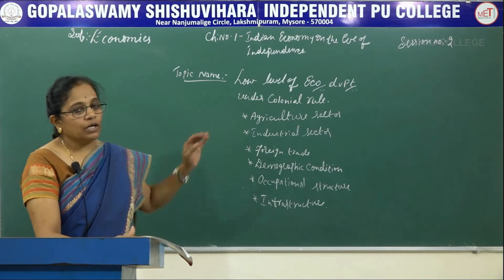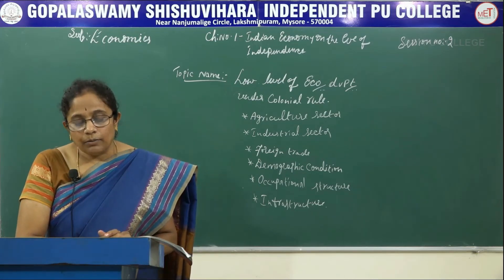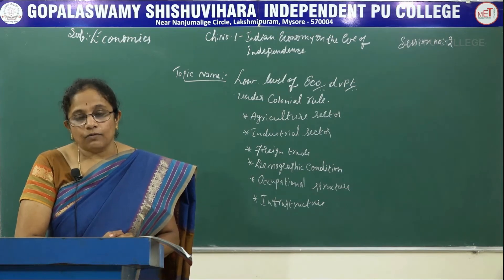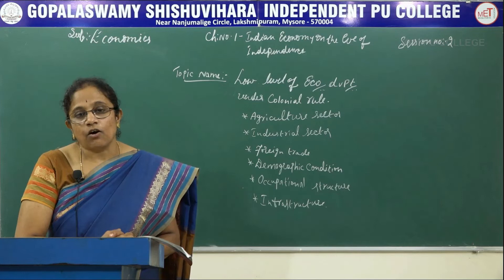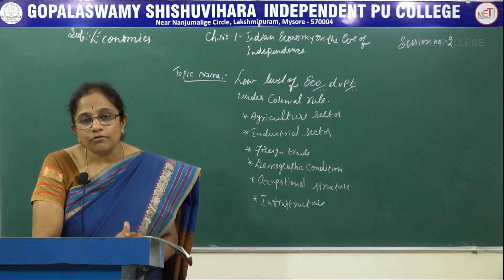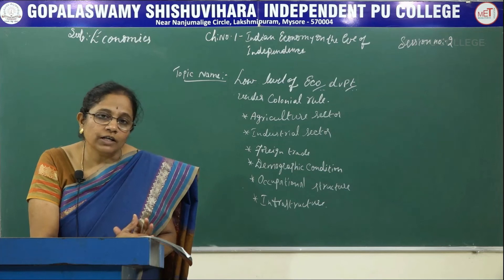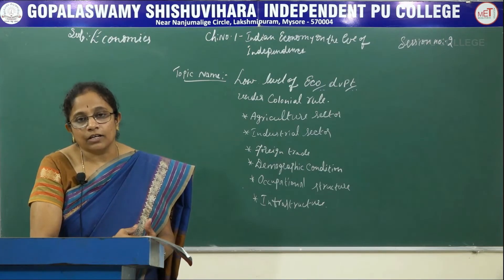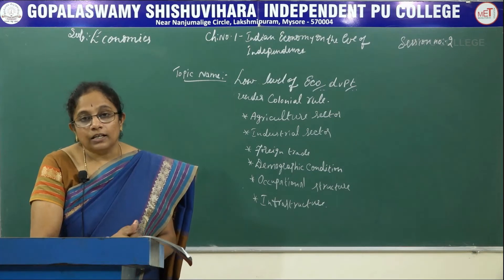Now let us learn about the failure in the industrial sector. India could not develop a strong industrial base during the colonial government period. The handicrafts industry, which was good, also declined. The colonial government had a two-fold motive. One was to reduce India to the status of a mere exporter of raw material to the industries operating in Britain. And they wanted to turn India into the consumer of goods manufactured in Britain with the help of raw material exported from India. For example, India was growing cotton extensively and all this cotton was exported to Britain, and they were sending ready-made cloth to India for us to buy.